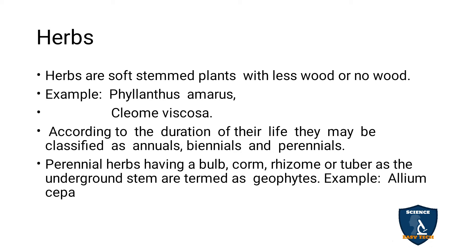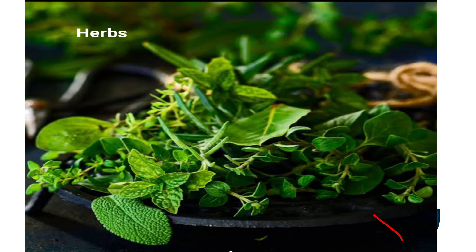These underground stem plants are called geophytes. Geophytes means below the ground — underground plants are called geophytes. Example: Allium cepa — the botanical name of onion. So, the herb can grow to very less than 10 centimetres. The stem is weak and green in color — green in color means they are called herbaceous.